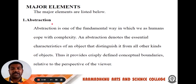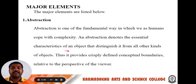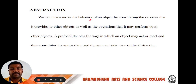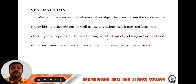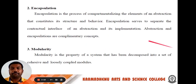First, major elements. First one: abstraction. Abstraction is one of the fundamental ways in which we humans cope with complexity. An abstraction denotes the essential characteristics of an object, distinguishing it from all other kinds of objects. Thus, it provides sharply defined conceptual boundaries relative to the perspective of the viewer. We can characterize the behavior of an object by considering the services that it provides to other objects, as well as the operations that it may perform upon other objects. A protocol denotes the way in which an object may act or react, and thus constitutes the entire static and dynamic outside view of an abstraction.